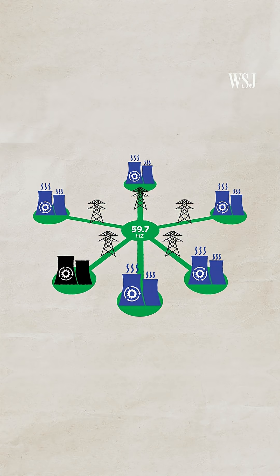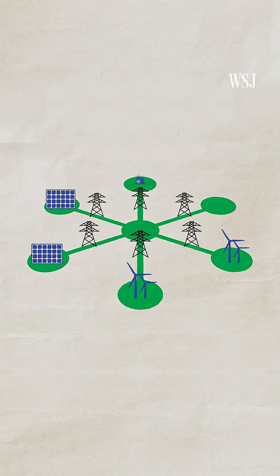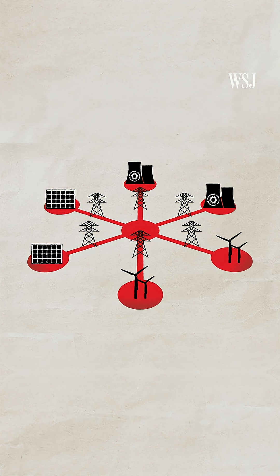Anything too drastic and power plants will disconnect from the grid to protect themselves from damage. Using more renewable energy and fewer conventional power sources means there's less inherent inertia in the network, which can increase the risk of widespread blackouts.